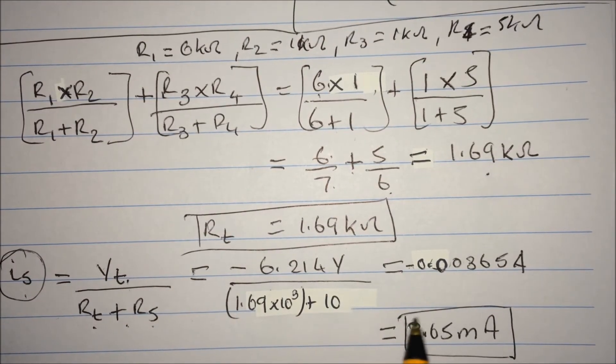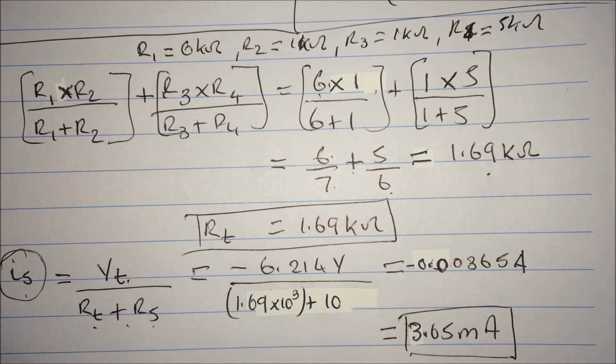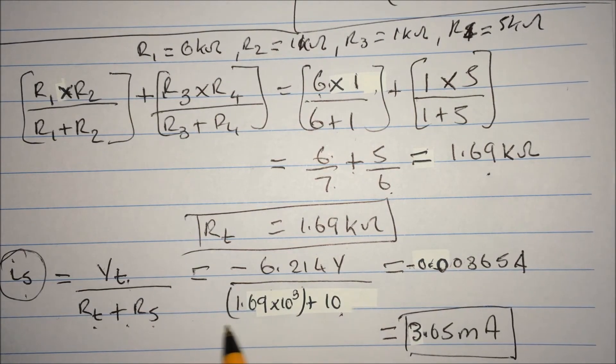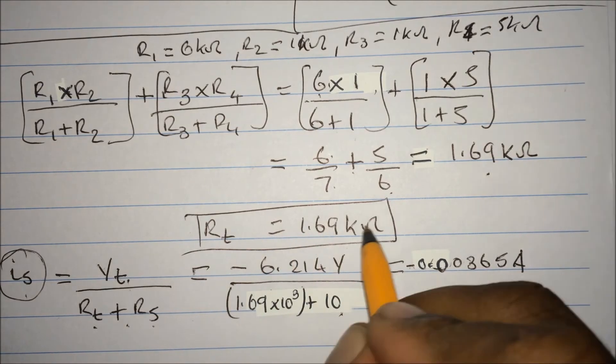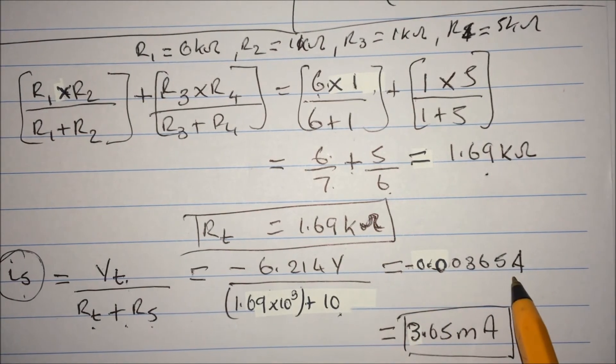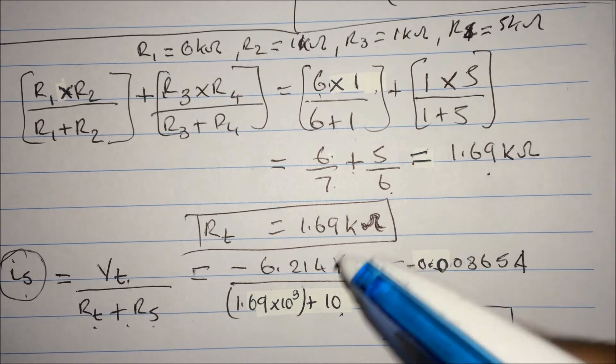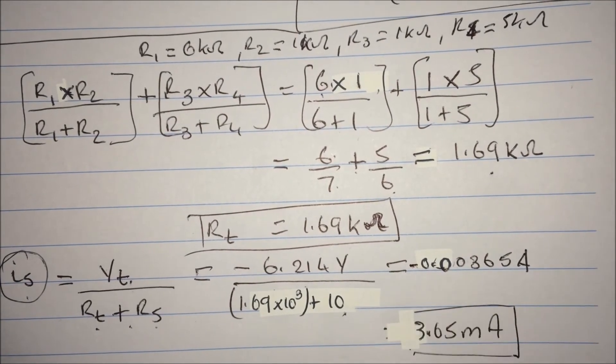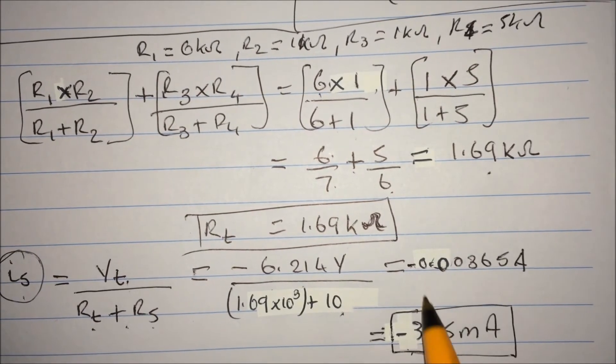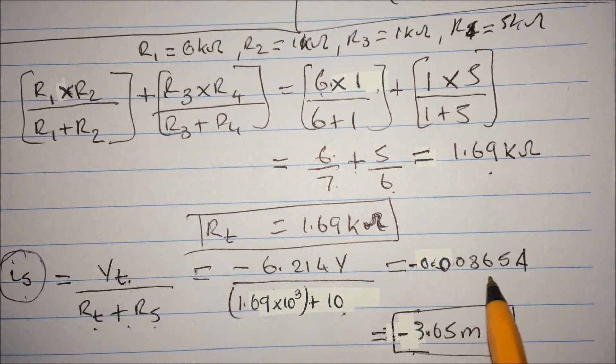And remember this is in kilohms, so 1.69 times 10 to the power of 3, or 1.69 times a thousand to be clear, to talk English, because a lot of teachers on YouTube they just go very technical and the guys are there and then go huh, what's this, what are they talking about, what's this kilo. Kilo is just a thousand. Anyway, so 1.69 times a thousand plus 10 ohms which is R5. And this was R Thevenin which we calculate here, remember, and that's supposed to be R5.